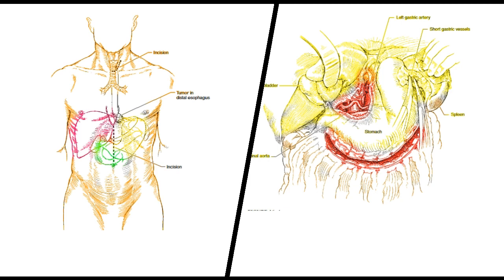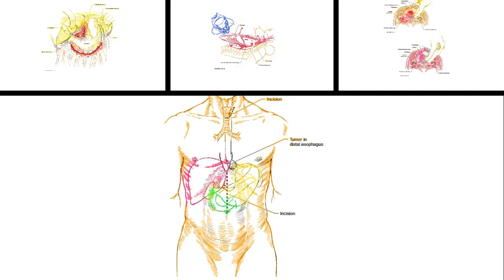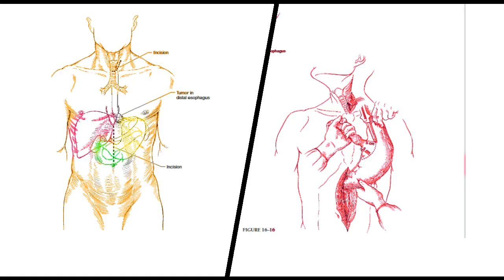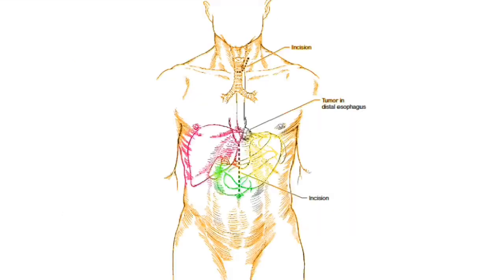In performing a transhiatal esophagectomy, the surgeon removes accessible cervical, intrathoracic, and intra-abdominal lymph nodes for staging, but a complete en-block resection of adjacent lymph node-bearing tissue is not accomplished.